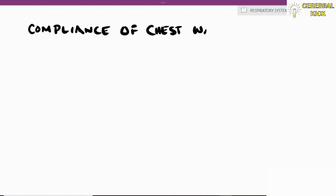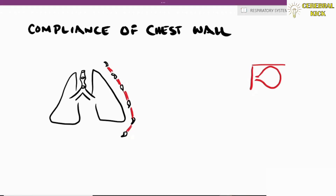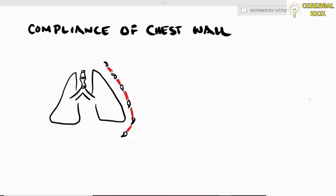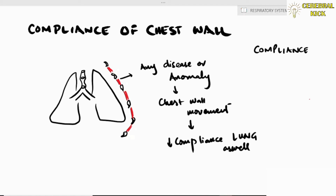What about the compliance of the chest wall? Imagine inflating a balloon inside a small rigid box — the rigidity of the box reduces the compliance of the balloon. In the same way, any disease that reduces the compliance of the chest wall also reduces the overall compliance of the lung.